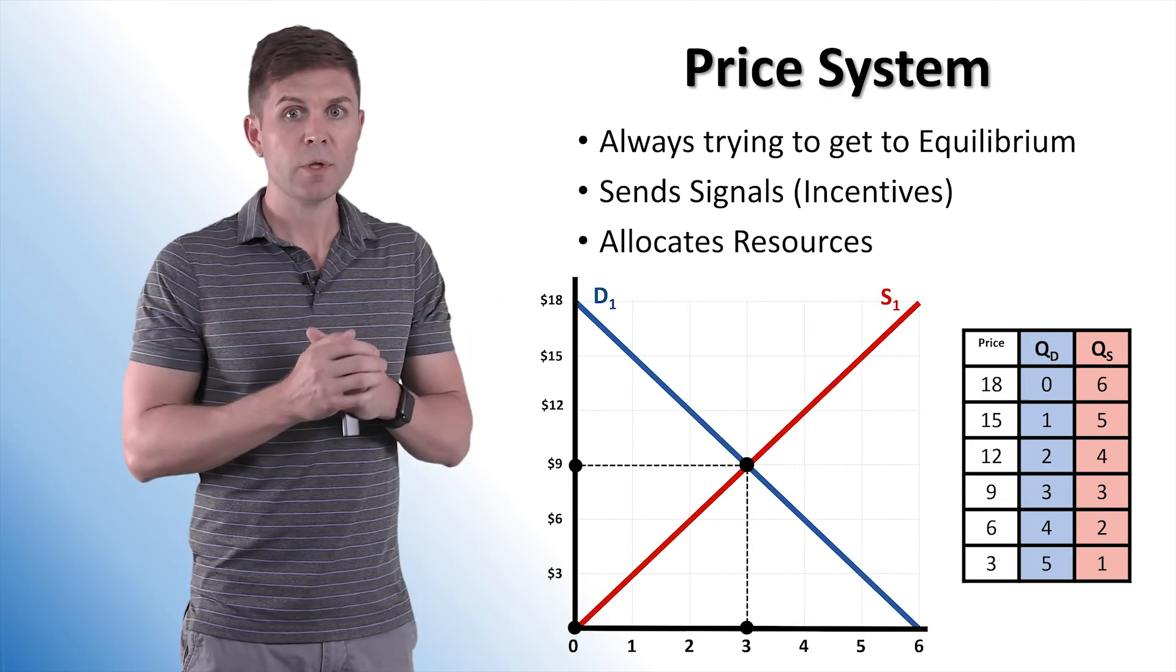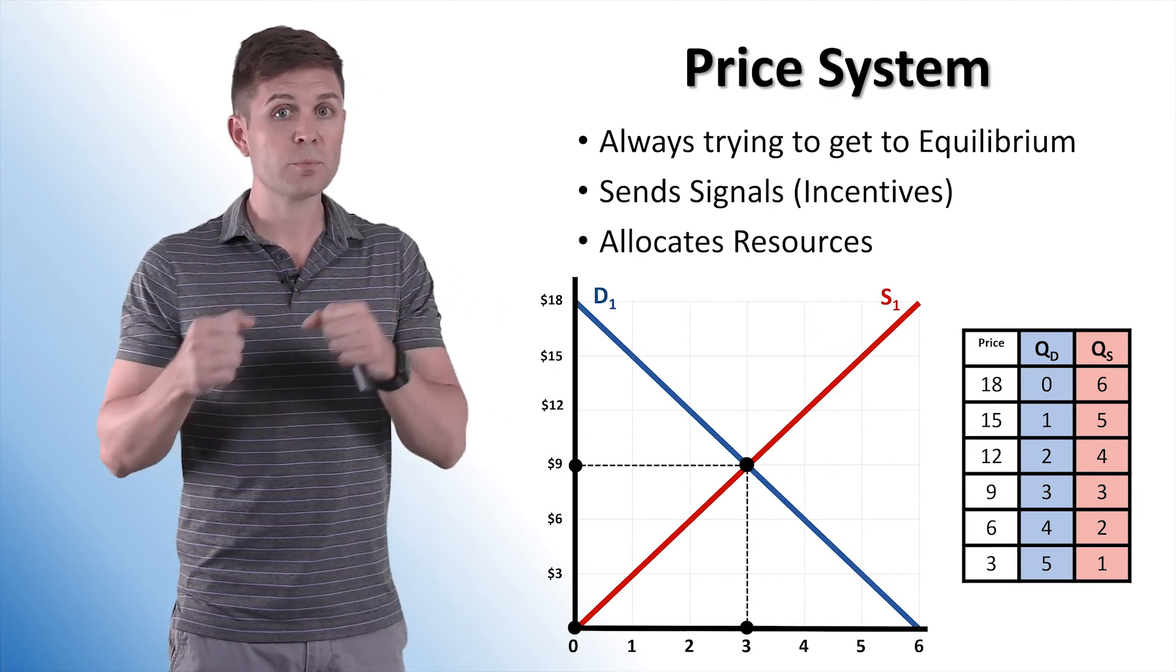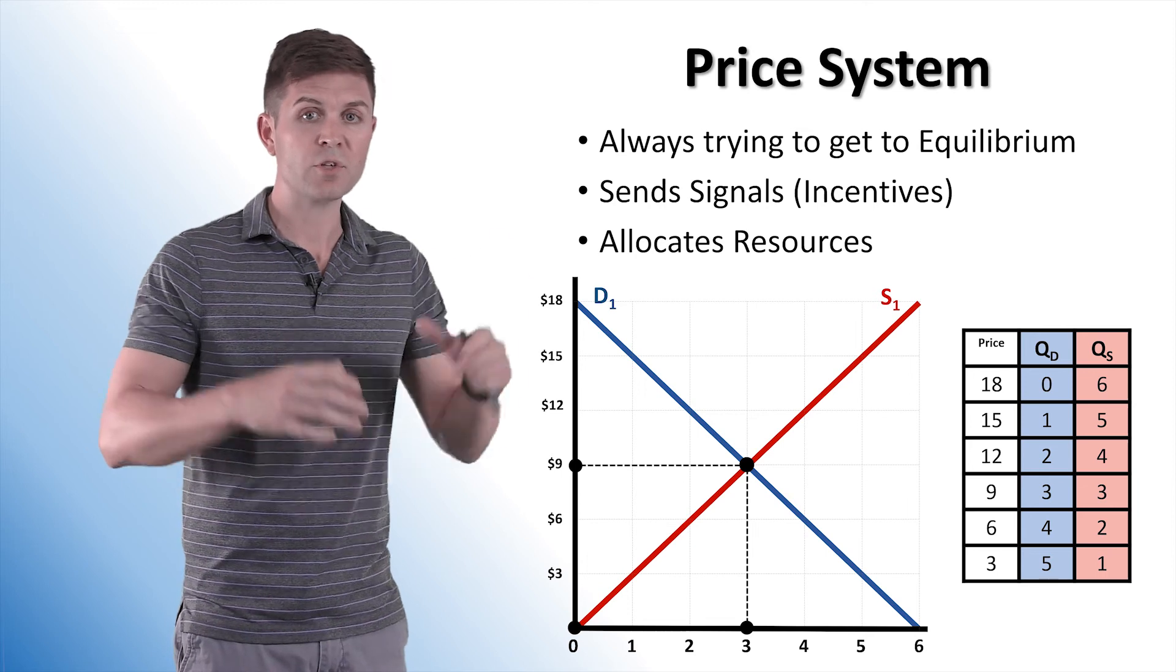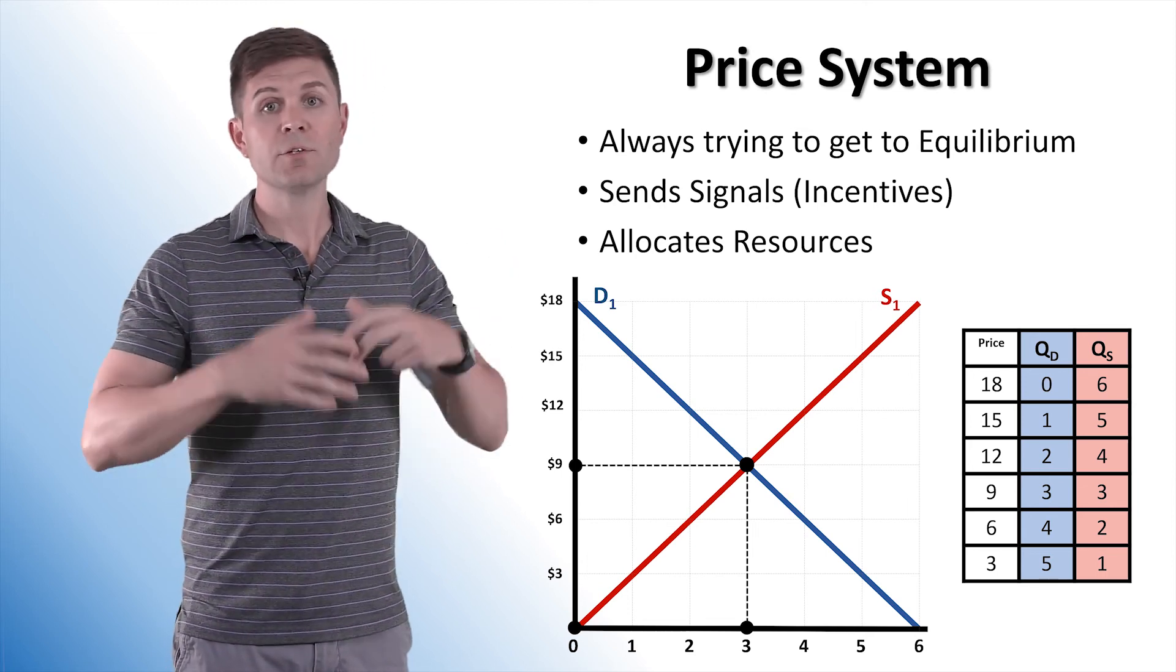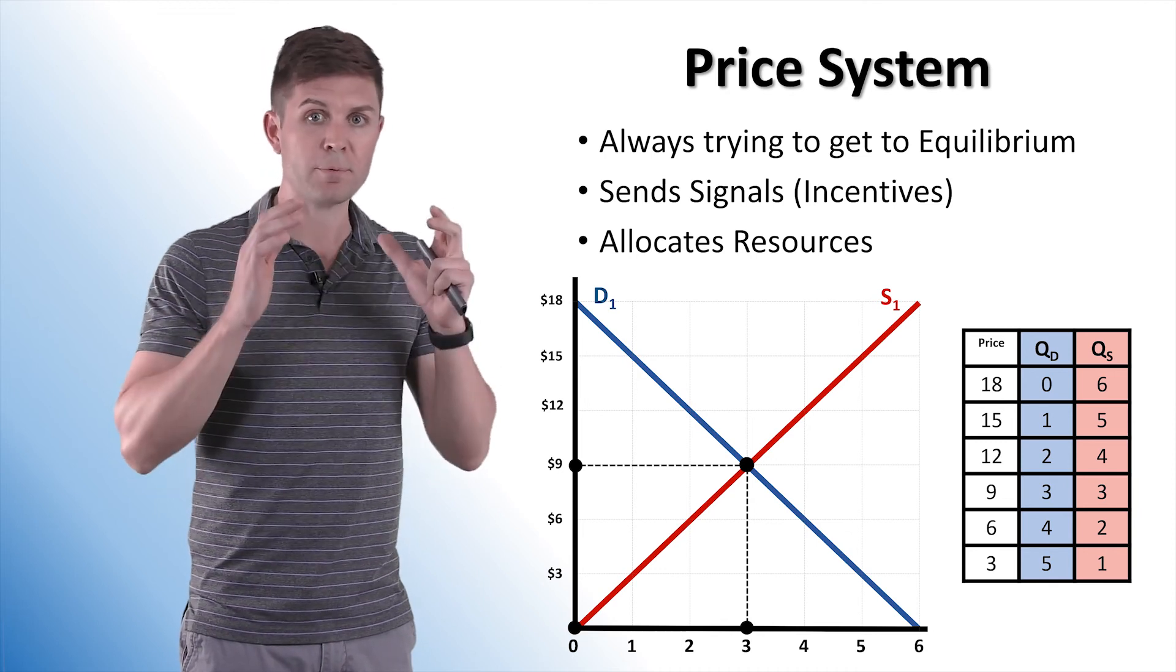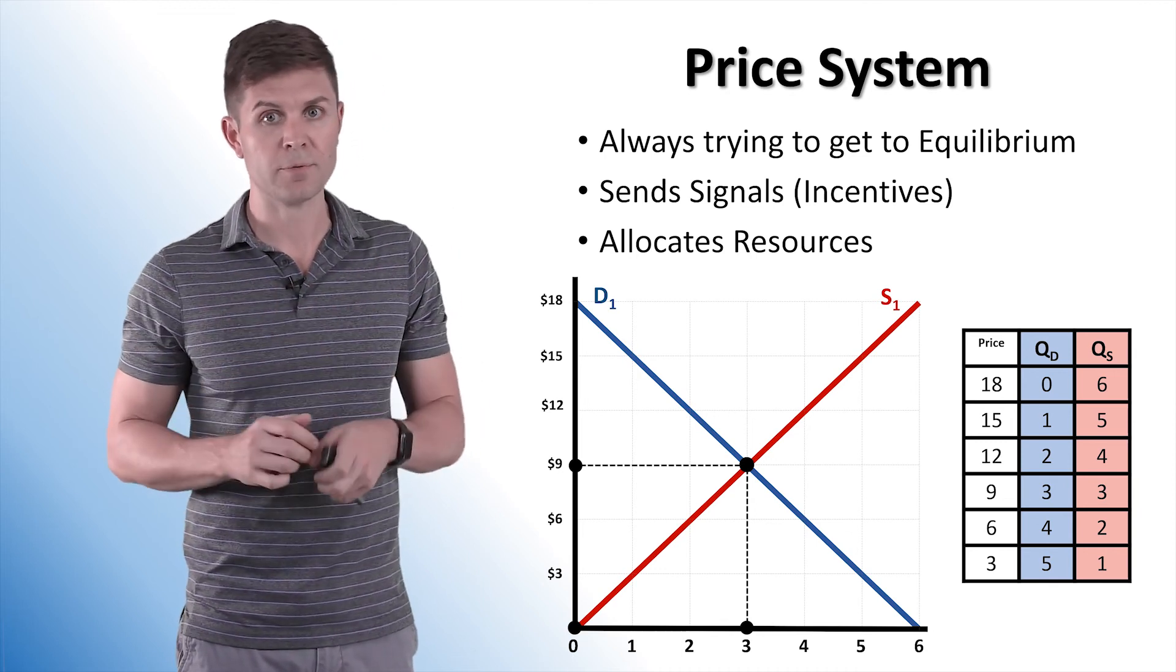Everybody's an optimizing individual. As prices change, consumers and producers will do what's in their best interest. And it always pushes that price back to equilibrium. And in doing so, it allocates resources by providing them to the people who value them the most.